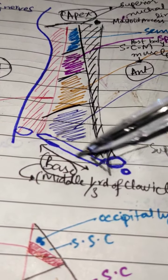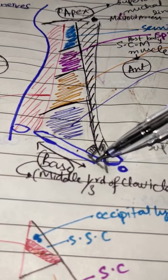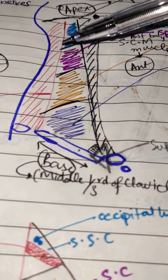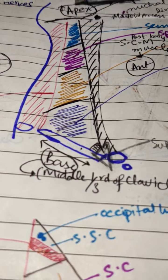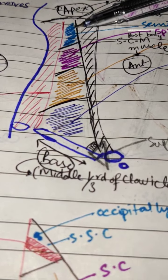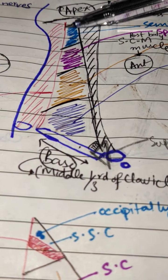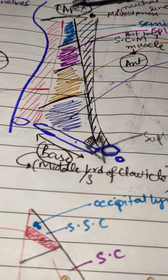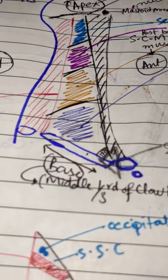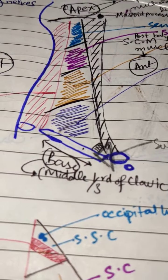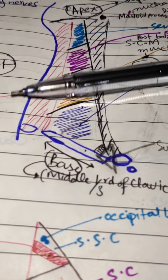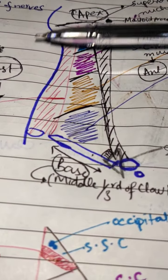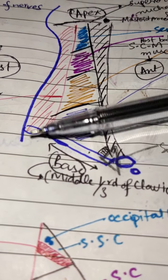The base is formed by the medial one-third of the clavicle. The apex is where the sternocleidomastoid muscle meets the trapezius muscle at the superior nuchal line on the occipital bone. The roof is covered by the investing layer of deep cervical fascia.